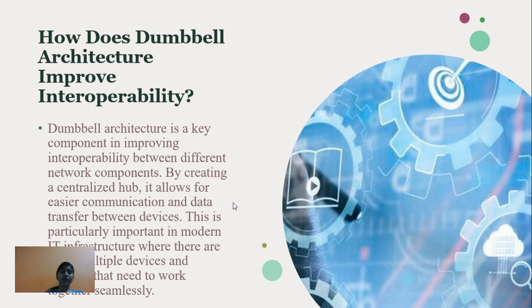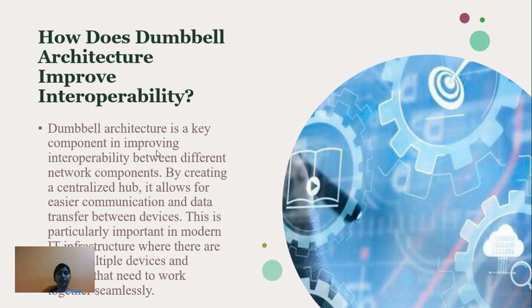Dumbbell architecture is a key component in improving interoperability between different network components. By creating a centralized hub, it allows for easier communication and data transfer between devices. This is particularly important in modern IT infrastructure where multiple devices and systems need to work together seamlessly. Additionally, dumbbell architecture helps to reduce latency and increase reliability and scalability.